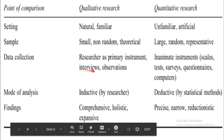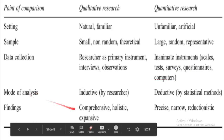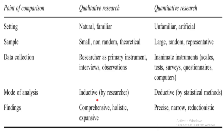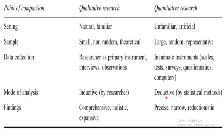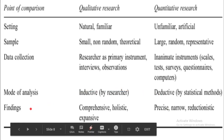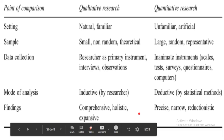For data collection, in qualitative research the researcher is the primary instrument, using techniques like interviews and observation as main tools. In quantitative research, instruments are scales, tests, surveys, questionnaires, and computers. For mode of analysis, qualitative uses inductive analysis done by the researcher, producing comprehensive, holistic, and expansive findings. Quantitative findings are precise, narrow, and reductionistic.